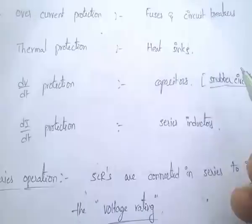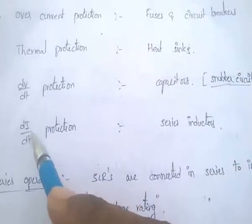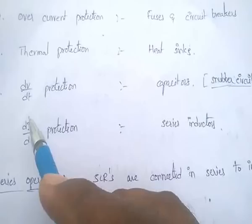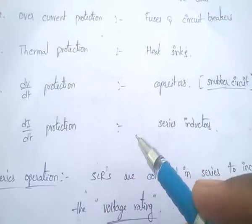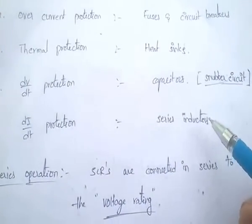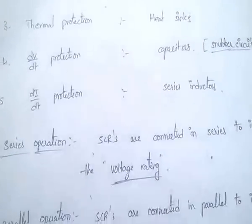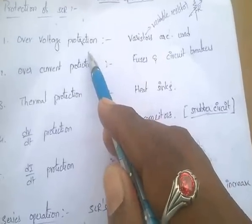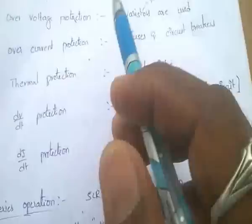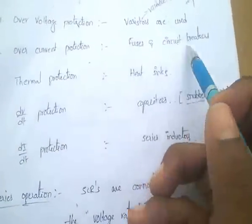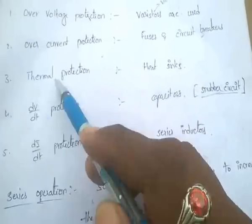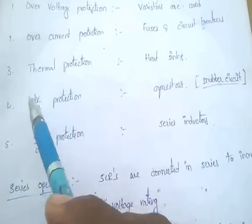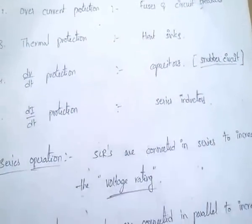For di/dt protection — that means change in current — inductors are used. Since inductors do not allow sudden change in current, series inductors are used for di/dt protection. Summary: overvoltage → varistors; overcurrent → fuses and circuit breakers; thermal → heat sinks; dv/dt → snubber circuit; di/dt → series inductors.